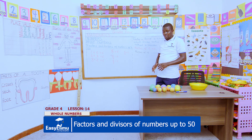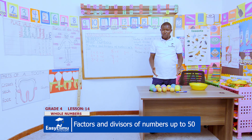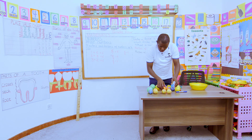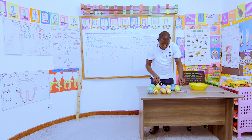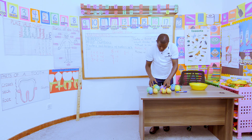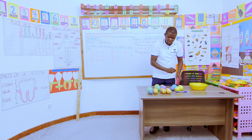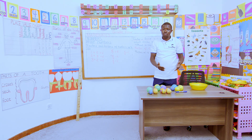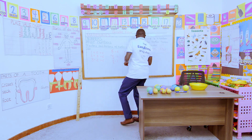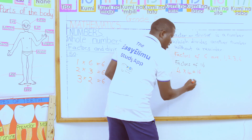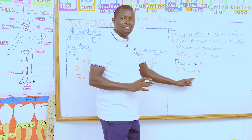In our case here with 16 balls, we can decide to arrange them in groups of fours. So we have one ball, second, third, and fourth — these are four balls. Another group of four, and another group of four, and another group of four. So we have four groups of four balls each — four groups of four balls each will give us 16. Remember, we should not have a remainder. So here we don't have any remainder.